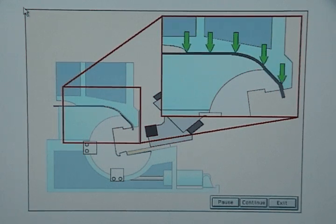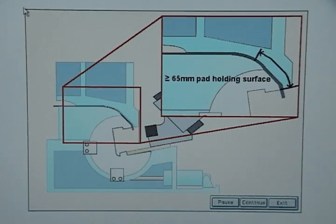The press pad provides pressure to hold the part while the flange is being made. There must be at least 65 millimeters of pad holding surface along the flange line and at least 15 millimeters of it must overlap onto the rotor cap.